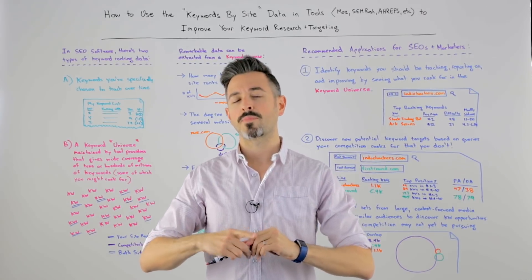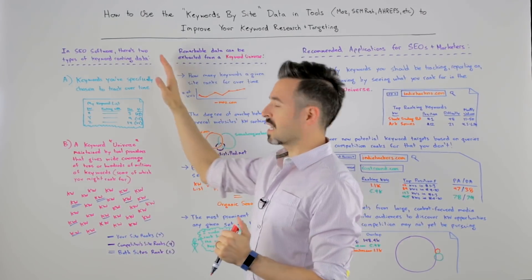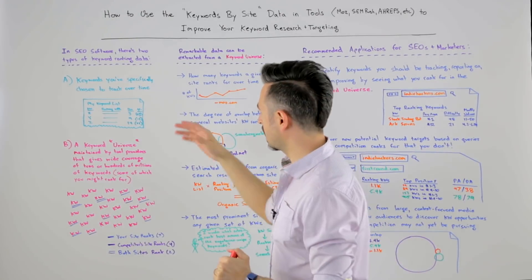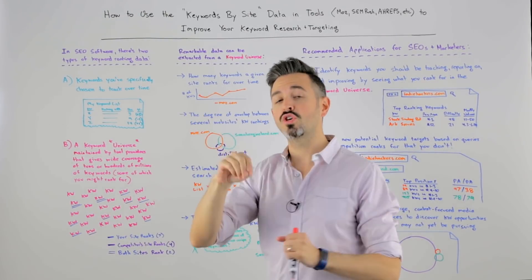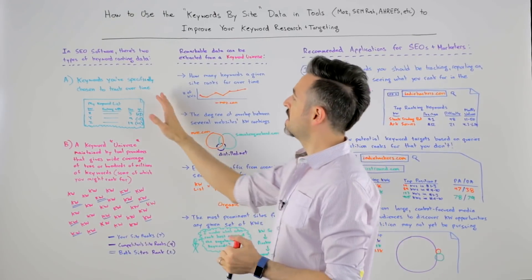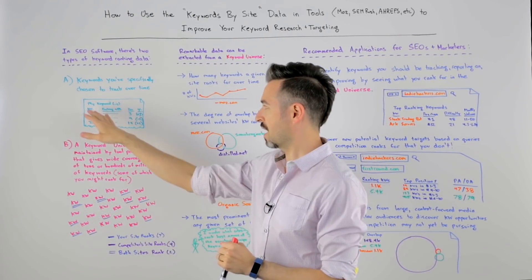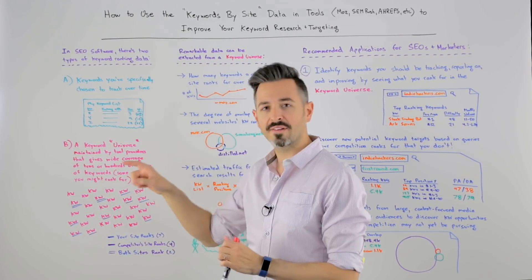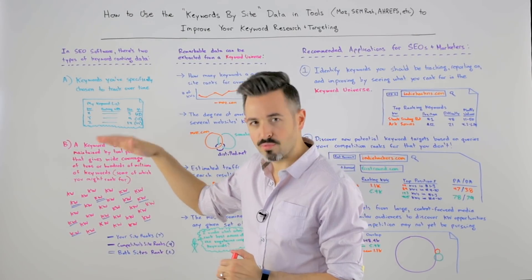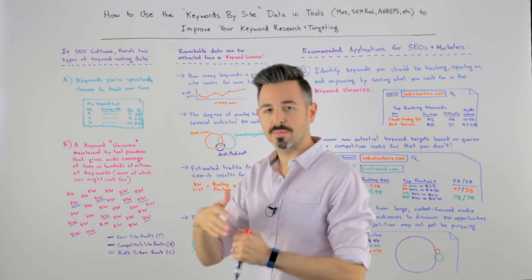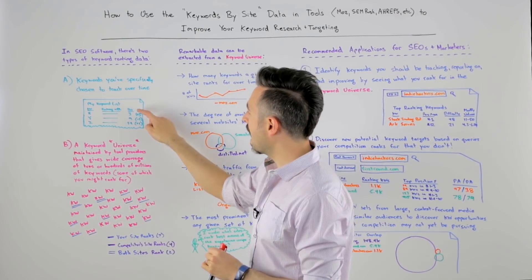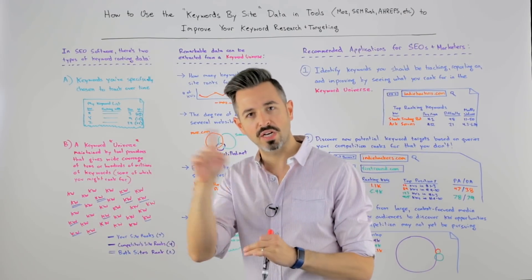Basically, the way you can think of this is in SEO software, there are two kinds of keyword rankings data. There are keywords that you have specifically selected — your marketing manager or your SEO has specifically selected to track over time. So you've said, I want to track X, Y, and Z. I want to see how they rank in Google's results, maybe in a particular location or country, and I want to see the position and the change over time.